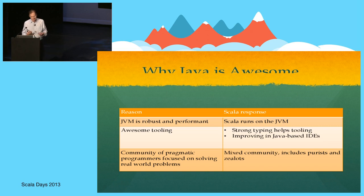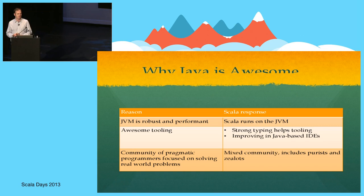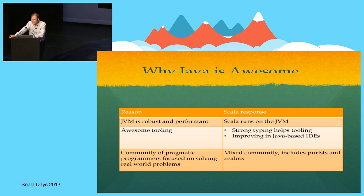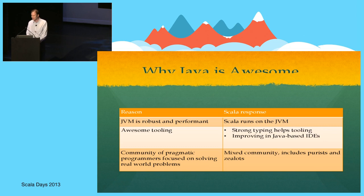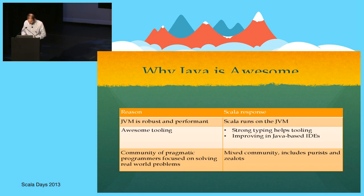One of the real strengths of the Java community is that it's a pretty pragmatic community focused on solving real-world problems. This is something where, frankly, we don't compare quite so well. We have a mix of folk in our community, and there do seem to be quite a few people who aren't highly focused on solving real-world problems. I think that is a bit of a problem overall for Scala.